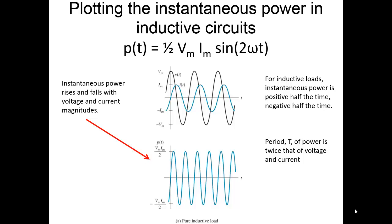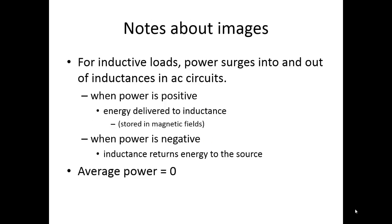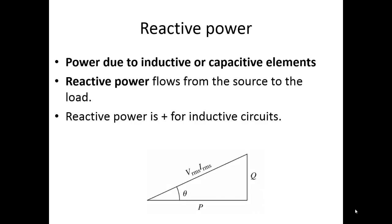If we plot that, our peak ranges from positive Vm·Im over 2 to negative Vm·Im over 2. The average power is zero. Power comes out of the source half the time: when the power is positive, energy is being delivered to the inductor; when the power is negative, energy is being delivered from the inductor back to the source. Unlike a resistive element, energy is actually returned to the source for inductive circuits. We call this reactive power. The reactive power is positive for inductive circuits.